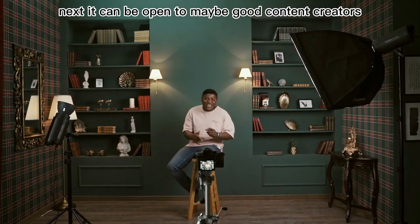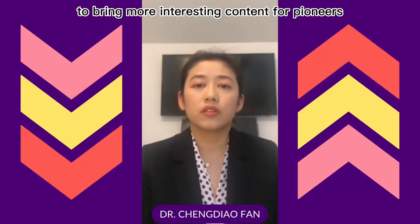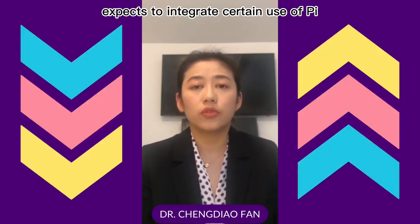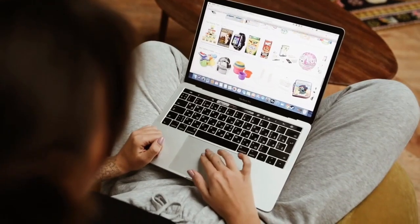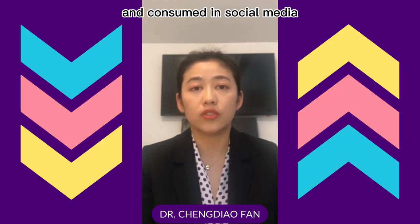Next, it can be opened to good content creators on the internet, even outside the Pi network — influencers on YouTube or Instagram — to bring more interesting content for pioneers inside the app, and to experiment with Pi utility. The type of content can expand from initially only about Pi to more general good content. Of course, the core team expects to integrate certain uses of Pi to curate the content and organize non-core-team creators' access to the home screen channel that reaches millions of pioneers. This is not only part of the Pi utility experiment, but also attempts to innovate how quality content can be achieved and consumed in social media.